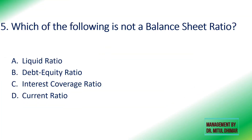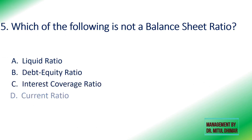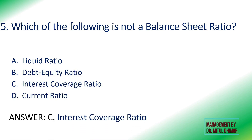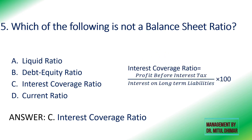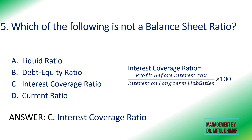Fifth: which is NOT a balance sheet ratio — liquid ratio, debt equity ratio, interest coverage ratio, or current ratio? The answer is interest coverage ratio. Balance sheet ratios use only balance sheet particulars. For interest coverage ratio, profit before interest and tax is from P&L, and interest paid on long-term debt is also found in P&L, so it is not a balance sheet ratio. All other options use only balance sheet particulars.